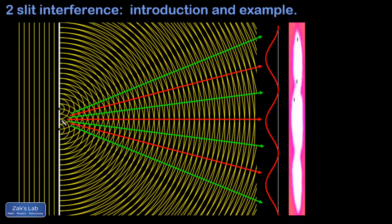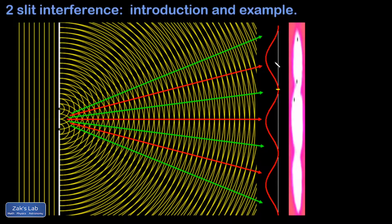When we project the pattern onto a screen, we obtain an intensity pattern given by this red curve. There is a maximum at the very center because that's the direction where alignment is perfect and the waves reinforce each other. There is a dead spot where crests land on top of troughs and the interference is destructive. Then another bright spot along the line of sight where crests are lined up with crests and troughs with troughs — constructive interference.